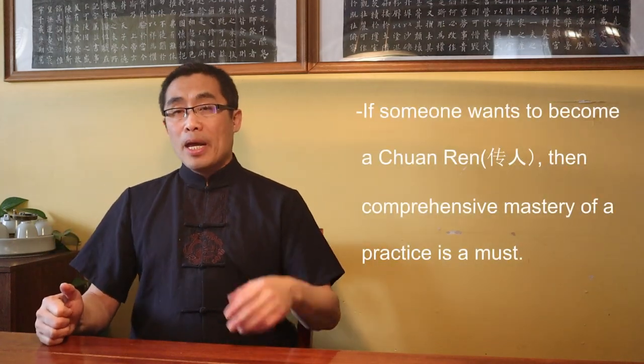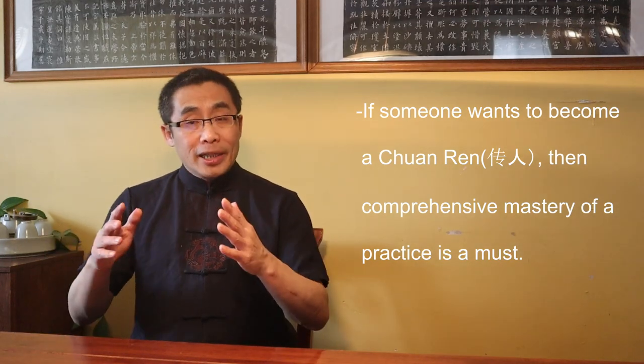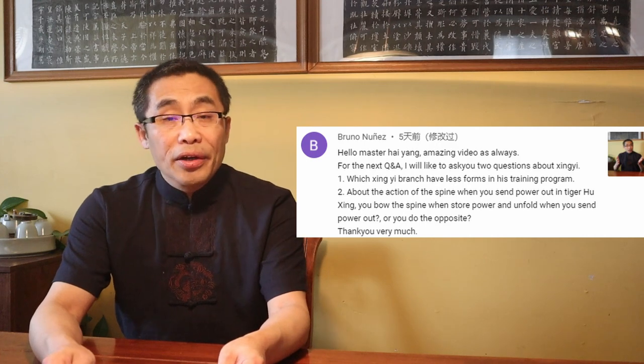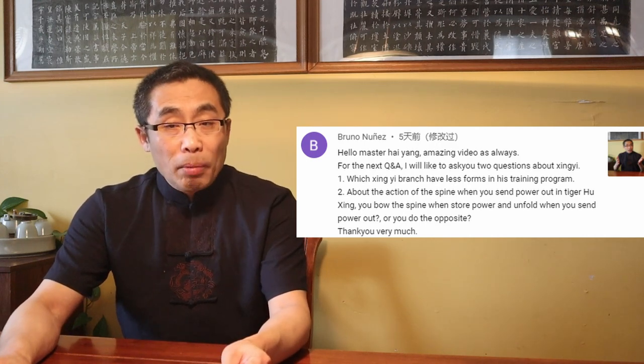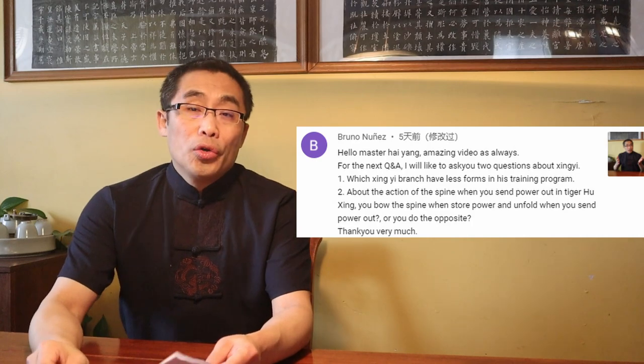More importantly, it is not about which style has more forms, but it is about our own choice to practice. If someone wants to become Quan Ren, then comprehensive mastery of practice is a must. His second question: about the action of the spine when you send power out in Tiger Hu Xing — do you bow the spine when you store power and unfold when you send power out, or do you do the opposite? My quick answer is that I slightly curve the spine when storing power and then unfold during release, not the opposite.